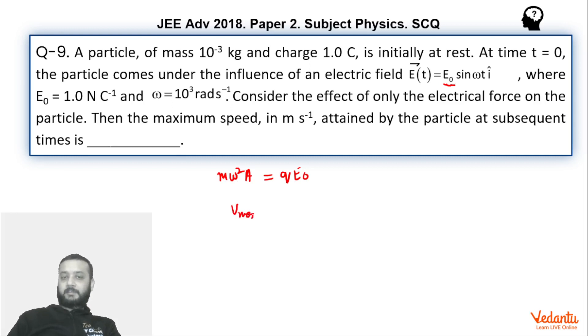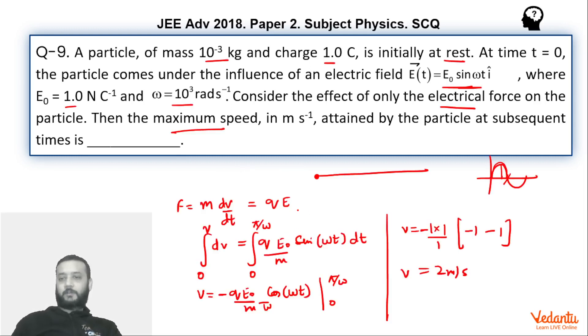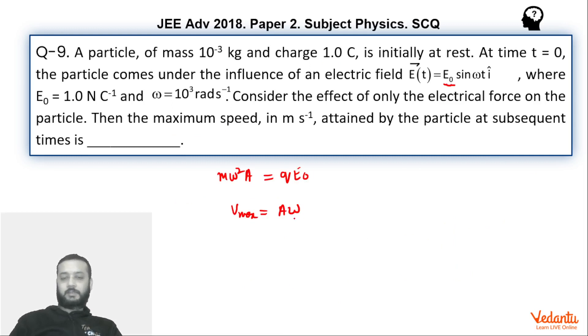Now V max is A omega. So basically from this, we can solve the question. But this is not correct. A factor of two is missing. If you solve this, you will get answer exactly half of what we have got here. That means if you solve this, you can see you will get answer one. So let us just do this. This will be interesting.